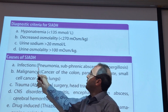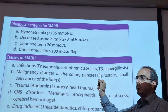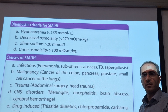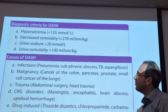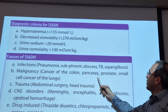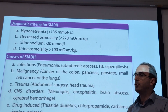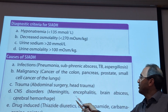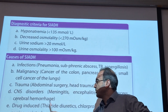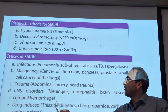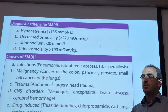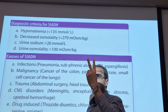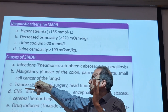The diagnostic criteria for SIADH include hyponatremia less than 135, decreased osmolality, and urine sodium greater than 20 mmol/L with increased urine osmolality. The main reasons include infections like tuberculosis, malignancy such as cancer of the colon, pancreas, prostate, and small cell lung cancer, trauma, abdominal surgery, head trauma, CNS disorders like meningitis, brain abscess, and drugs like thiazides. For SIADH, you should know we have decreased sodium in the serum and increased sodium in the urine.